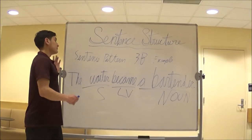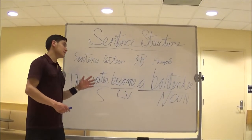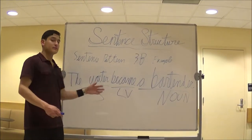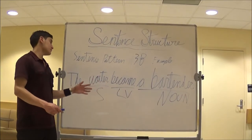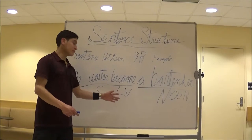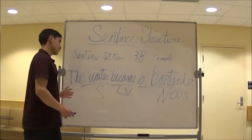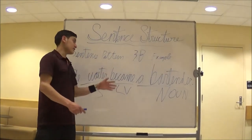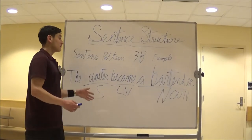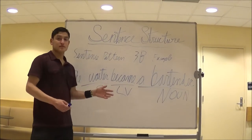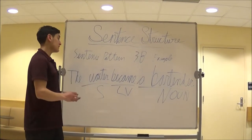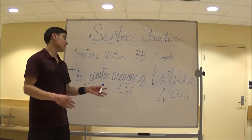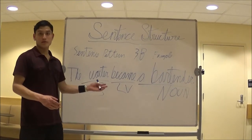Sentence pattern 3b. The example is: the waiter became a bartender. Became is the linking verb, waiter is the subject, and the bartender is the noun. Became a bartender is the noun phrase complement. Who became a bartender? The waiter.